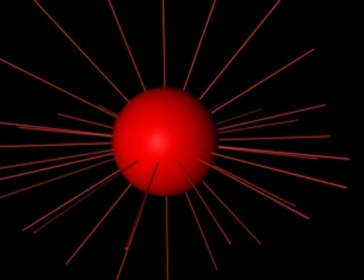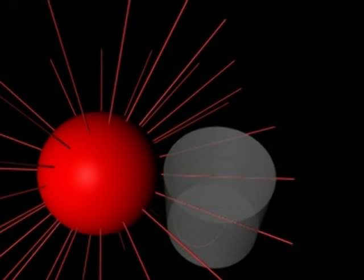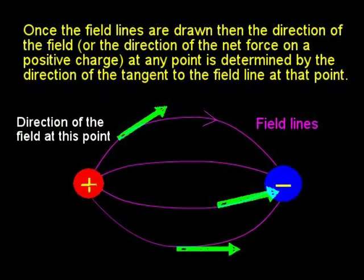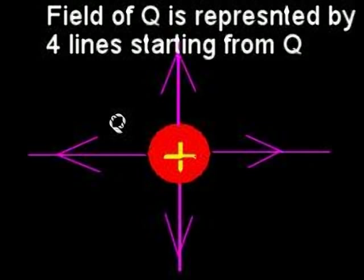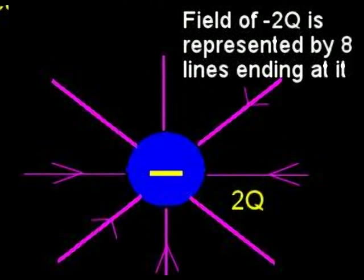No field lines start from nothing or disappear into nothing. If some lines start from a closed surface or region, then that region must contain a net positive charge; and if the lines end up within a closed surface or region, then that region must contain a net negative charge. Once the field lines are drawn, the direction of the field at any point is determined by the direction of the tangent to the line at that point. The total number of lines drawn out of the source charge depends only on the magnitude of the charge. The field strength is proportional to the number of lines per unit perpendicular area.